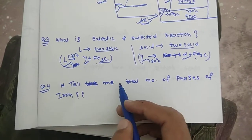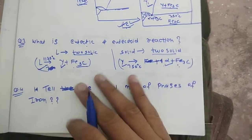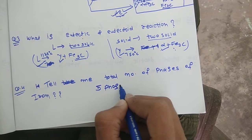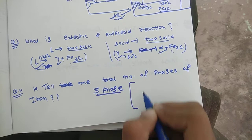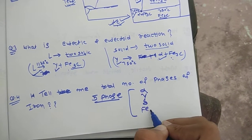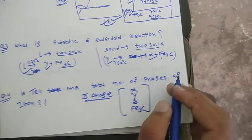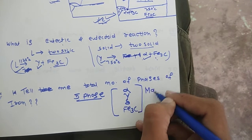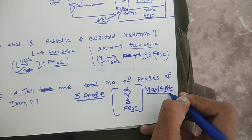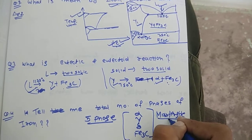The fourth question: what is the total number of phases of iron? In the iron-carbon diagram, we obtain a total of five phases of iron: alpha ferrite, gamma austenite, delta ferrite, and cementite (Fe3C) — these four phases can be seen in the iron-carbon diagram. The fifth phase is martensite, which cannot be seen in the iron-carbon diagram; to see the martensite phase, you have to draw the TTT curve.